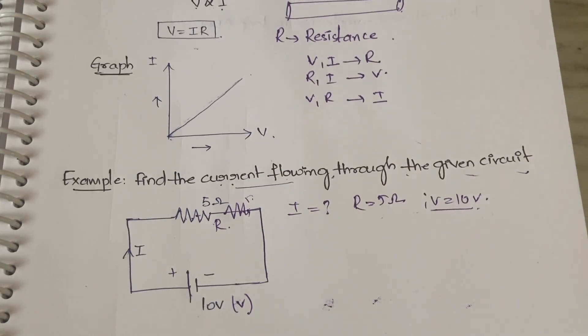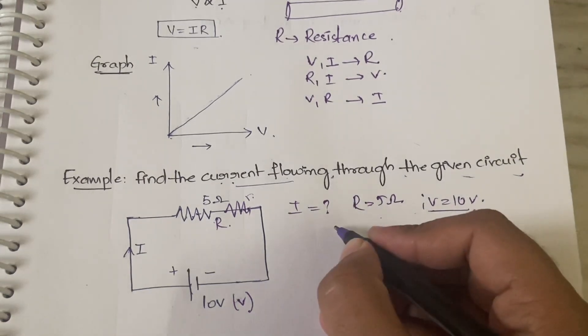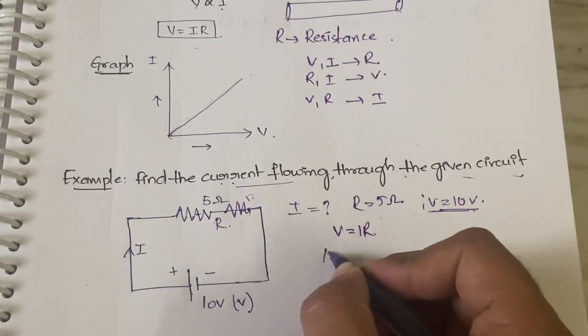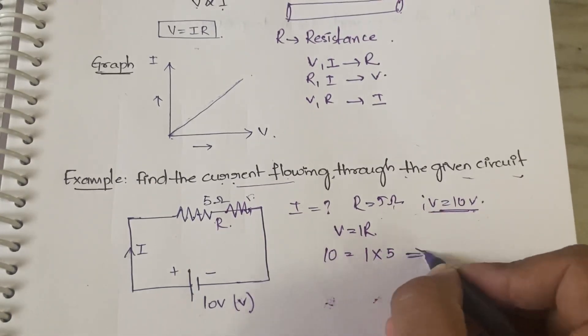You'll be learning better in the next coming videos about KVL and KCL. So for now, what is Ohm's Law? V is equal to I times R. You know V, so 10 is equal to I into what is R? 5.